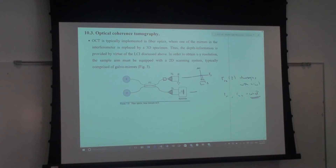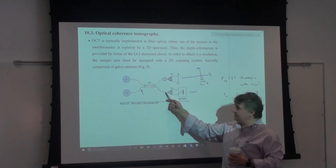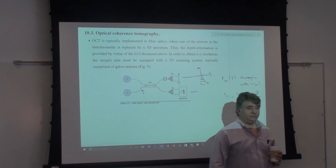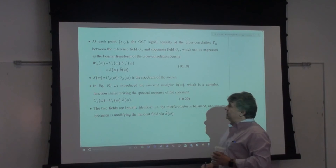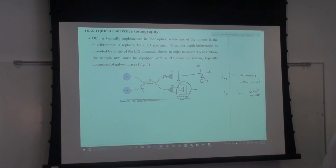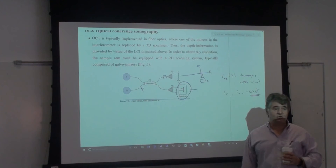OCT systems are typically fiber-optic based, which contributed to early success: all components — fiber couplers (50/50 beam splitters), fiber collimators, mirrors — were readily available as off-the-shelf telecom components at 1.3 μm or 1.5 μm wavelengths. You can assemble a basic interferometer in an afternoon. For imaging, the mirror on the sample arm is replaced with the object — for example, the eye — to perform depth imaging.